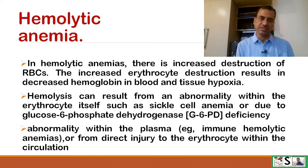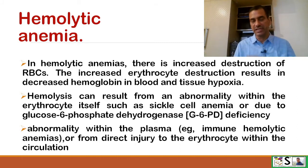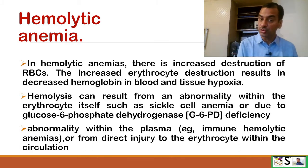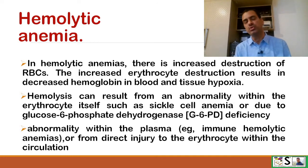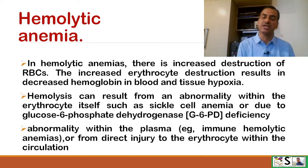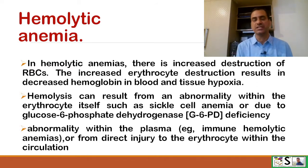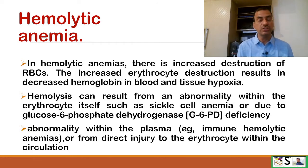Hemolytic anemia. In hemolytic anemia, there is increased destruction of RBCs — hemolytic, lysis means to destroy. The increased erythrocyte destruction results in decreased hemoglobin in the blood and ultimately tissue hypoxia. Hemolysis can result from an abnormality within the erythrocyte itself, such as sickle cell anemia or glucose-6-phosphate dehydrogenase deficiency. Sometimes an abnormality in plasma may also result in hemolysis, such as immune hemolytic anemias, or from direct injury to the erythrocyte during circulation.